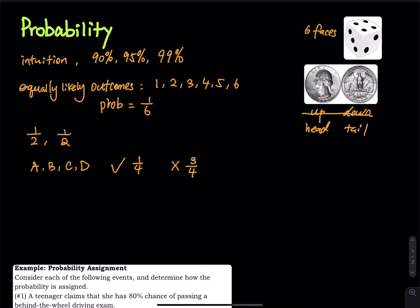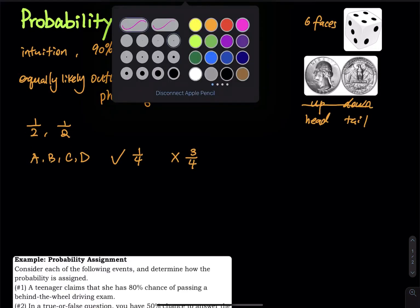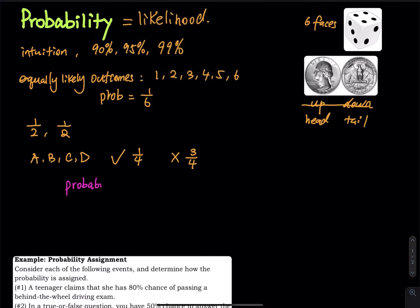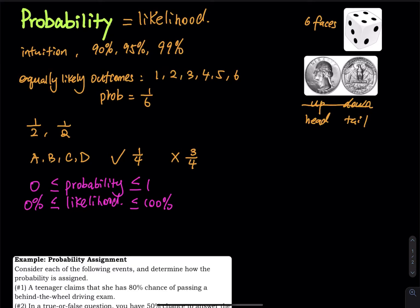So what is probability exactly? Let me give you a definition. Probability is basically a likelihood — a numerical measure between 0 and 1 that describes the likelihood that an event will occur. Probability closer to 1 indicates that the event is more likely to occur. Closer to 0 indicates the event is less likely to occur.